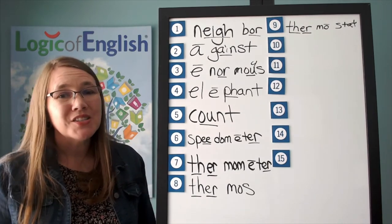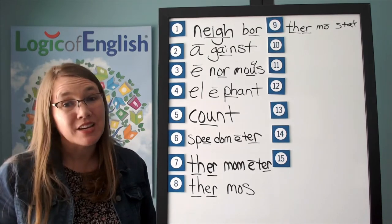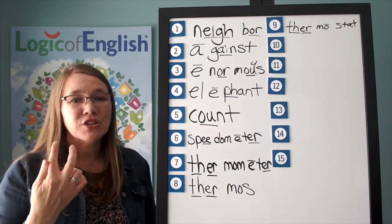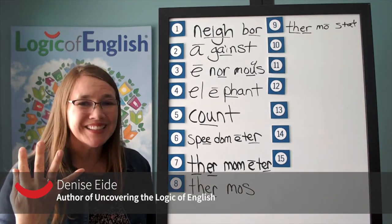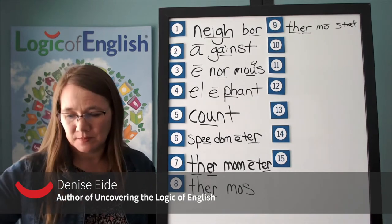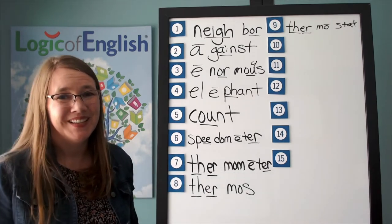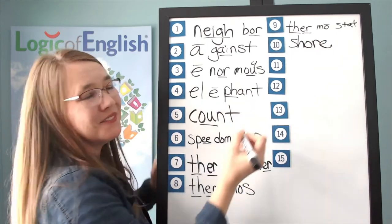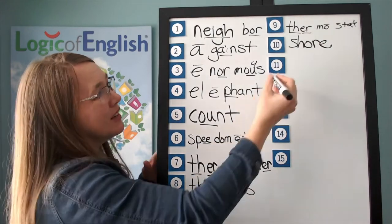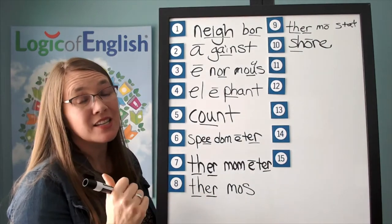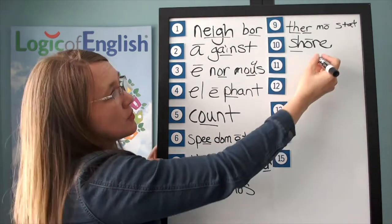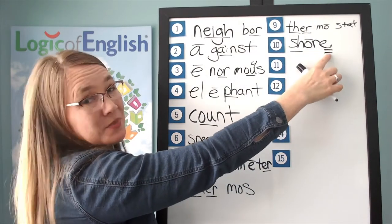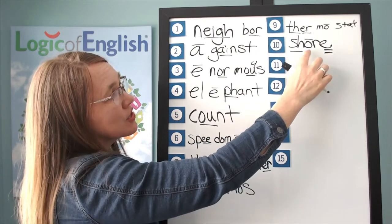The next word is shore. Let's go down to the shore and sit by the lake. Shore. Let's sound it out: SH-O-R, silent final E. Go ahead and write shore. Help me to write it: SH-O-R, silent final E. Underline the SH, put a line over the O, and double underline the E. The vowel said its long sound because of the E. SH-O-R. Shore.